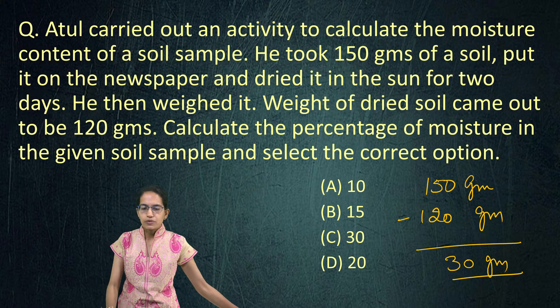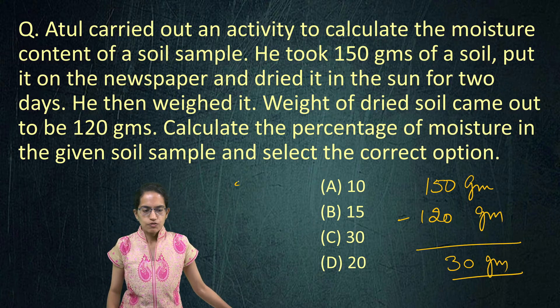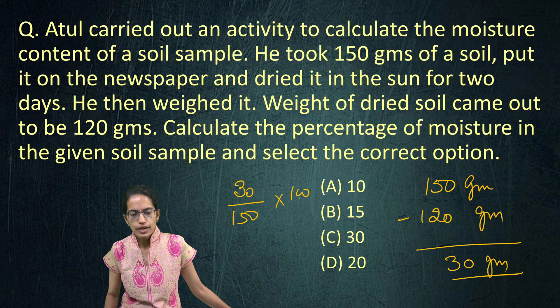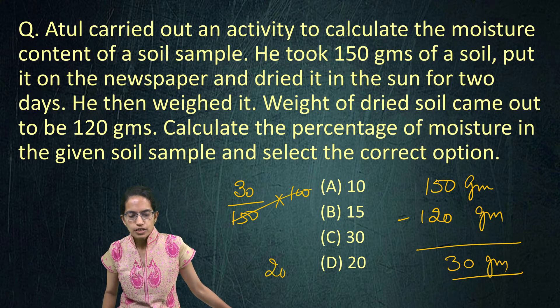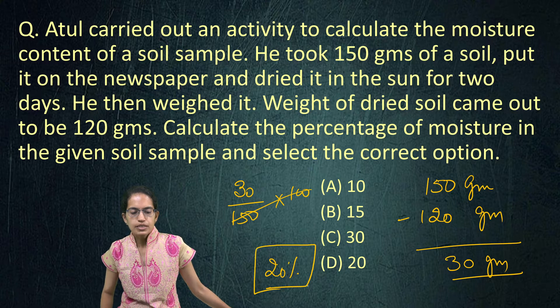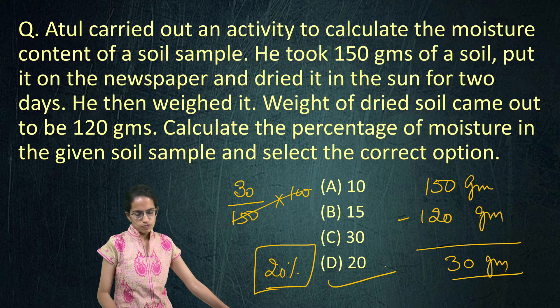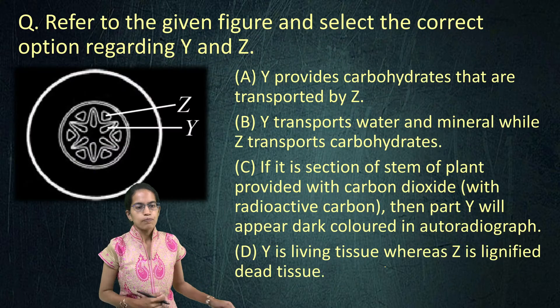To calculate the percentage of moisture: 30 divided by the original soil sample (150 grams) multiplied by 100, which gives 20 percent. So 20 percent is the right answer for this question.